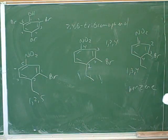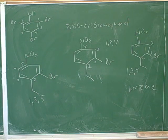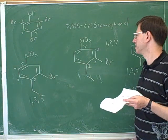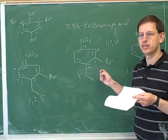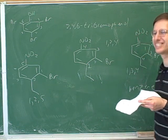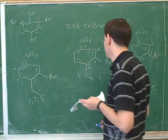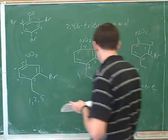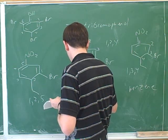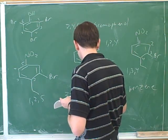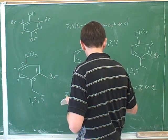Now let's give it a name using this numbering. The student said 1-ethyl-2-bromo-4-nitrobenzene. We always use alphabetical order to determine what order to list the substituents, so rearranging: it would be 2-bromo-1-ethyl-4-nitrobenzene. That's correct — 2-bromo-1-ethyl-4-nitrobenzene.